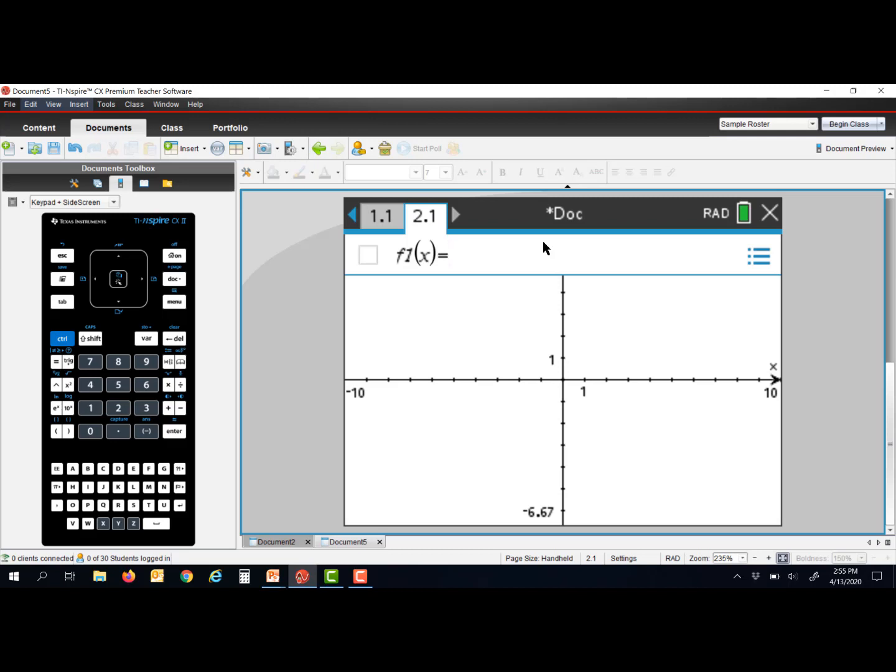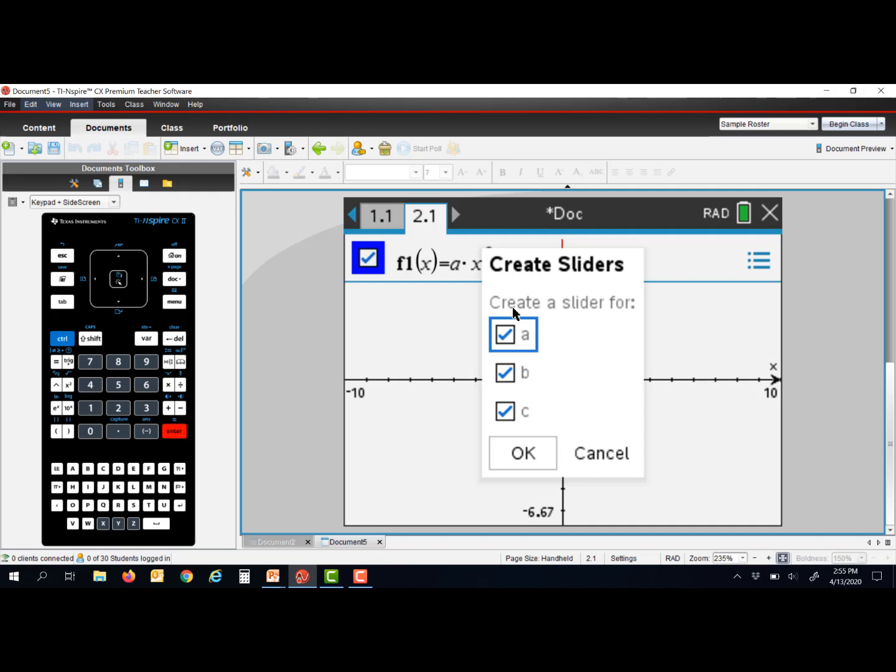This time, we're going to use sliders on a quadratic function, and I'm going to use a times x squared plus b times x plus c. Remember that I made sure to enter that multiplication symbol in between the a and the x and the b and the x. When I hit enter, I'm prompted again to create sliders for a, b, and c.